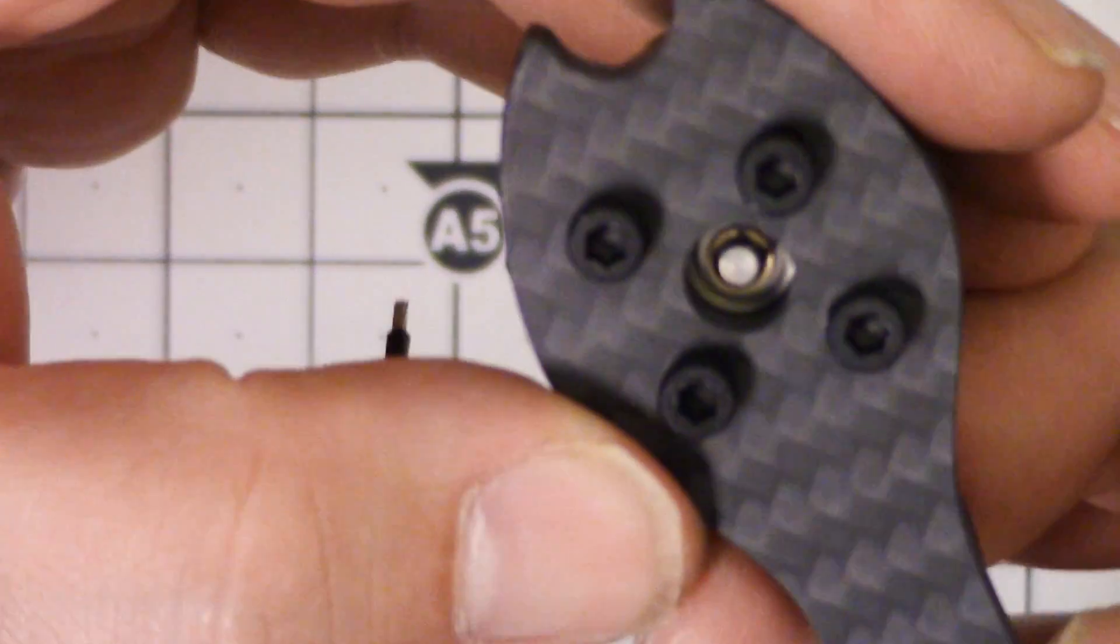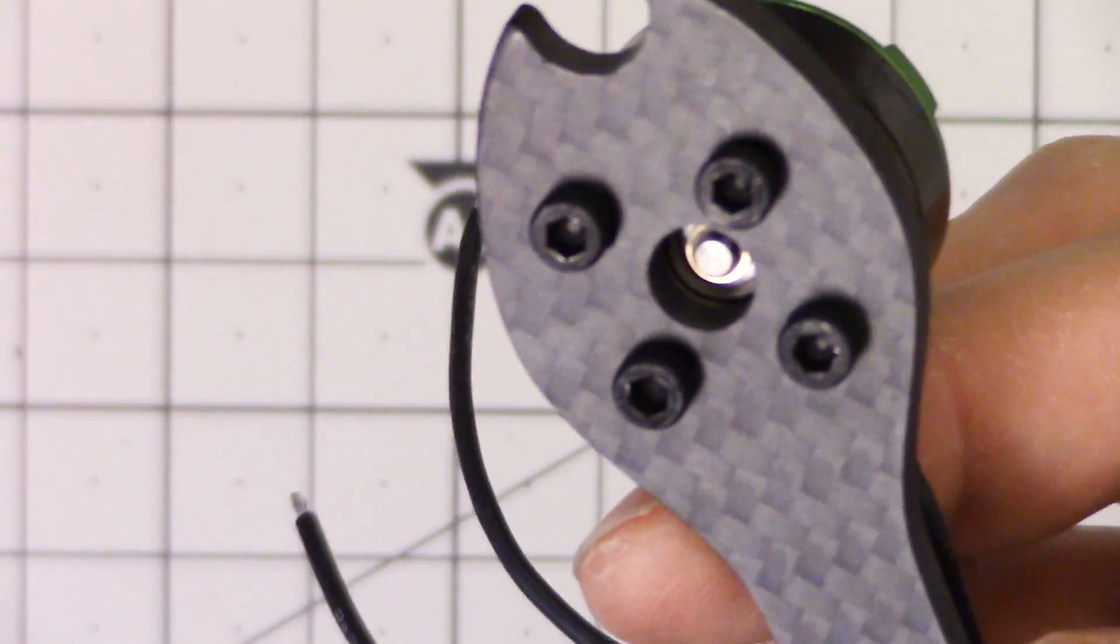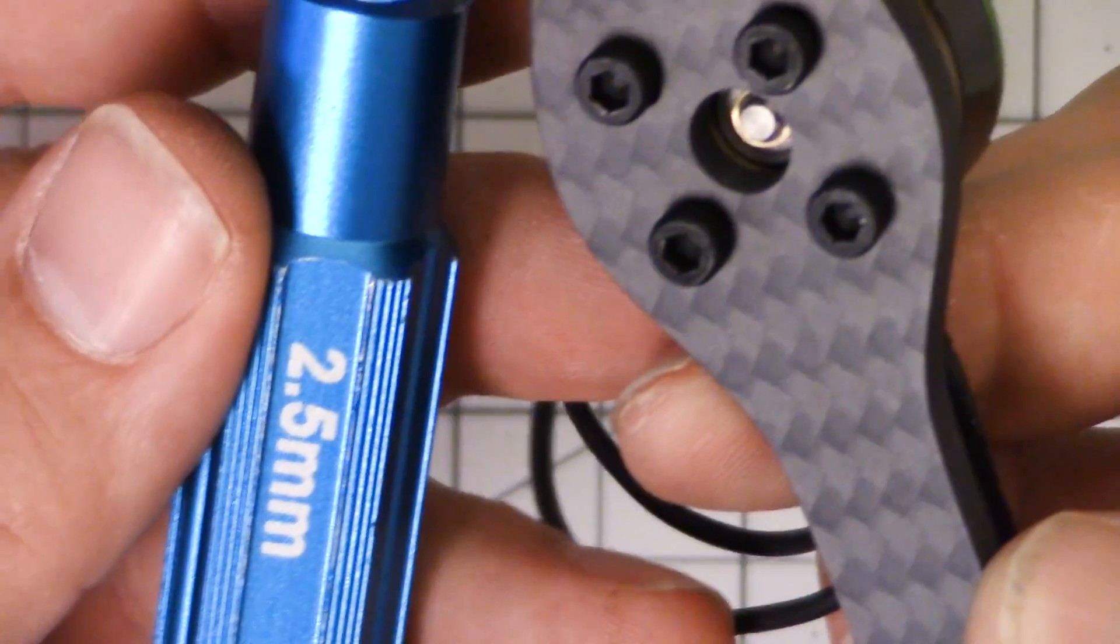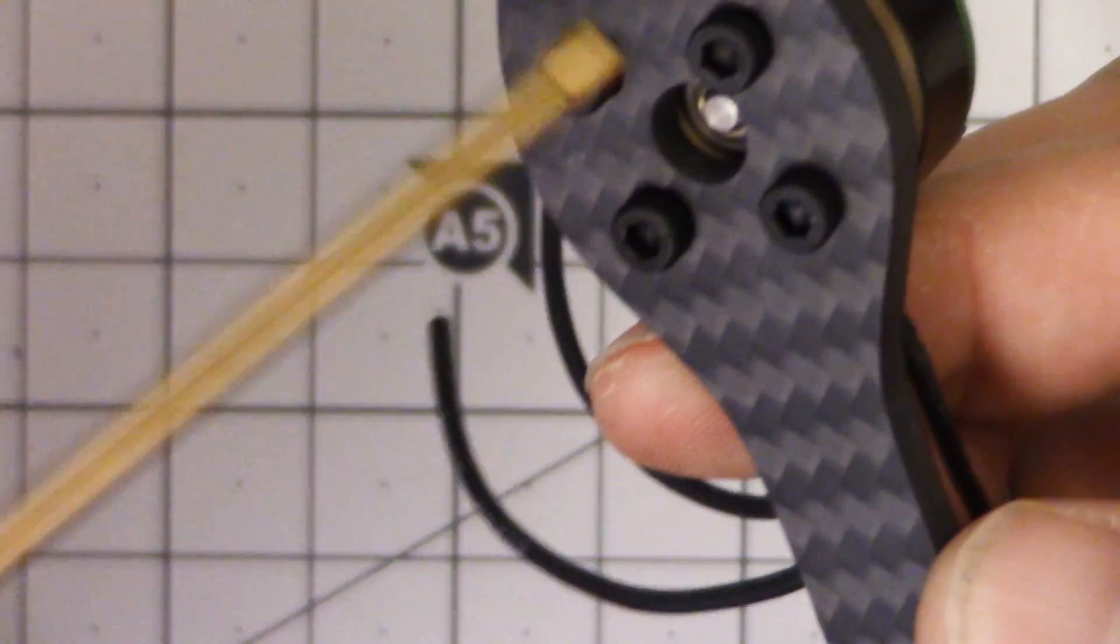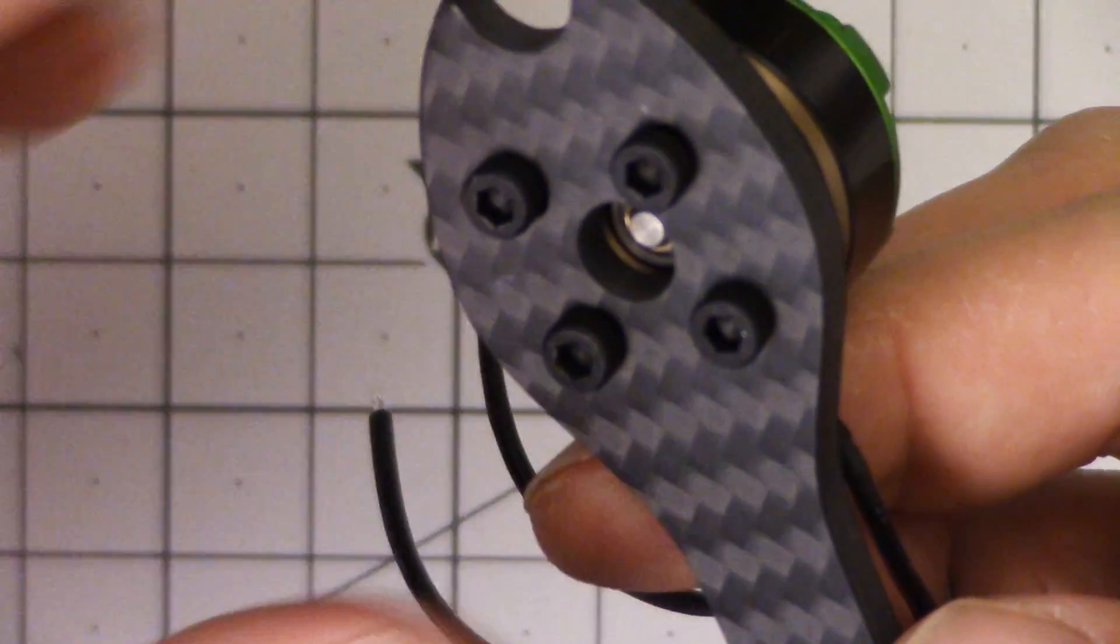But these are kind of button head screws and I actually prefer this style of screw head for motor screws because I think the larger 2.5 millimeter size is easier to get in there and I don't think it strips as easily.